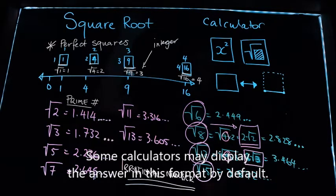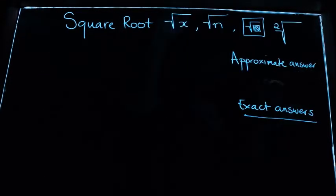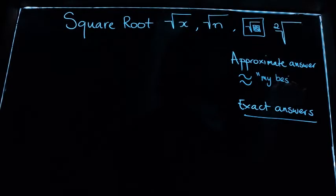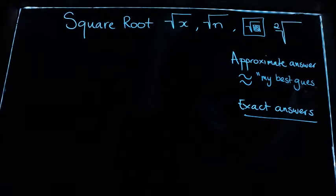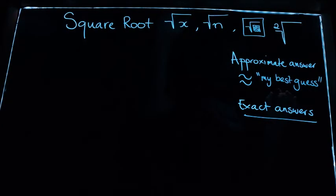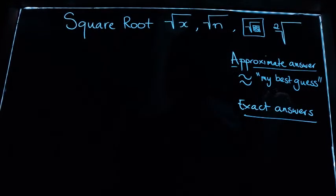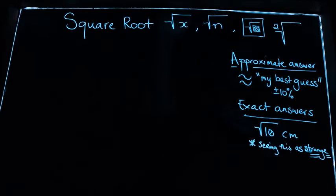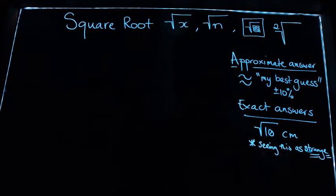For approximate answers we're going to use two squiggly lines - the approximately equal symbol. I read this as 'my best guess' - that's what I encourage you to think about it as. I'm going to try to be within plus or minus 10% of the answer. The exact answer - we need to show you that it's quite okay to leave your answer with the square root symbol on it.